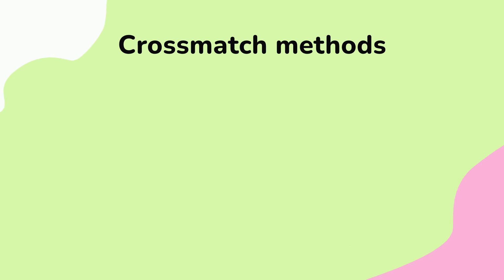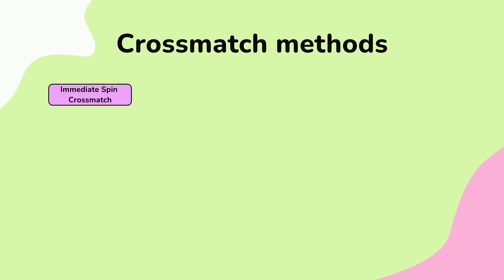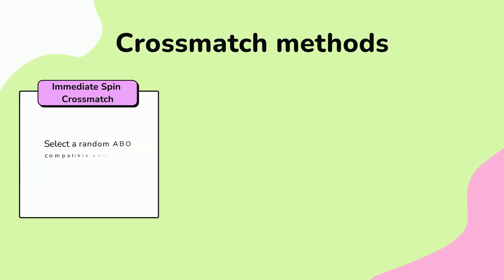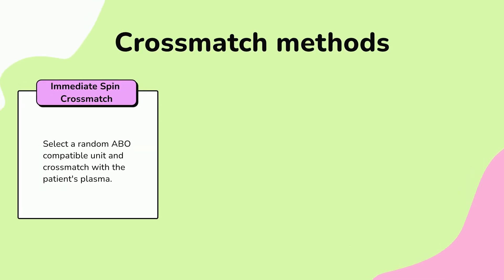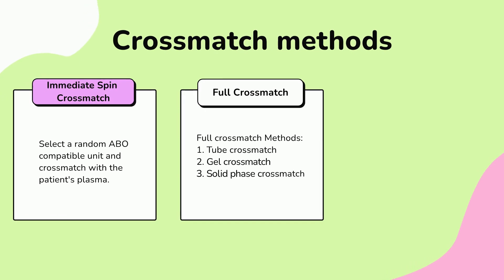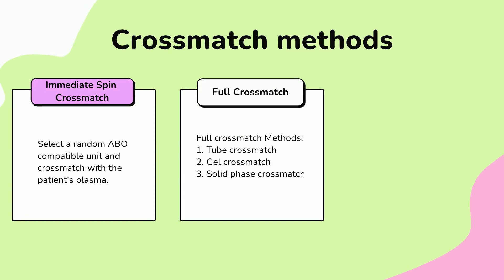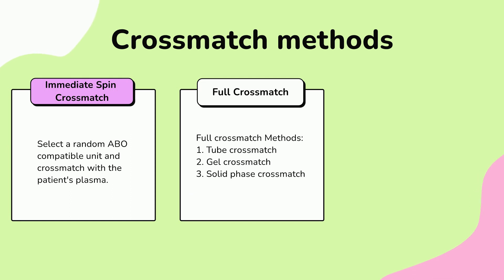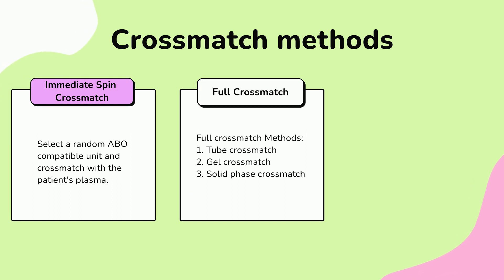Crossmatch methods are as follows: number one, immediate spin crossmatch; number two, full crossmatch. Full crossmatch can be performed using tube crossmatch, gel crossmatch, or solid phase crossmatch.